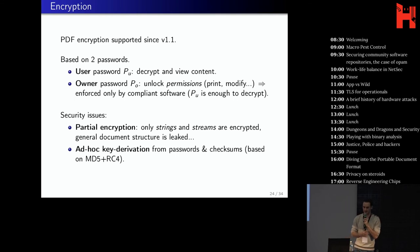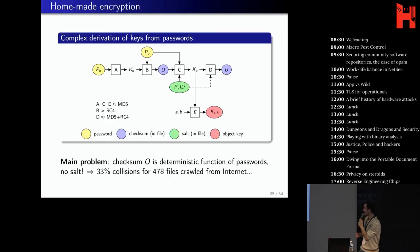So there are several security issues about the way they implement the encryption. First of all, the encryption is only partial. So they only encrypt strings and streams, so blobs of binary data. But the general document structure is leaked, so the numbers are not encrypted. They just decided that it is not important. So you can see the number of pages and stuff like that. And also, the way they derive encryption keys from passwords and checksums is quite annoying. It's based on MD5 and RC4. As you can see, it's quite complex. And it's very custom. It's not the way you should do crypto.